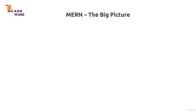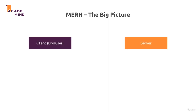We learned about the individual technologies — now what's the big picture? How do these things work together? We can differentiate between the front end and the back end, or client and server. What happens on the client is our front end; what happens on the server side is our back end. On the client we use JavaScript, specifically React.js, to build an amazing user interface.